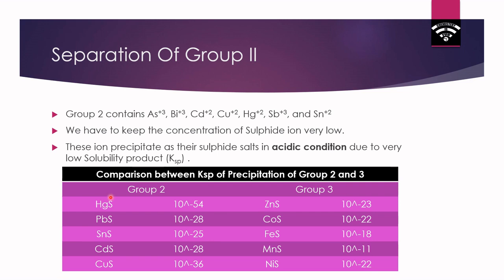The solubility product of HgS is about 10 to the power minus 54. To realize how small this is — the Avogadro number is 10 to the power 23 — so you can easily visualize how small 10 to the power minus 54 is. Other sulfides: lead sulfide has Ksp of 10 to the power minus 28, SnS has 10 to the power minus 25. These values are very low, so even with a very small concentration of sulfide ions, these cations will give precipitates of their corresponding sulfides.